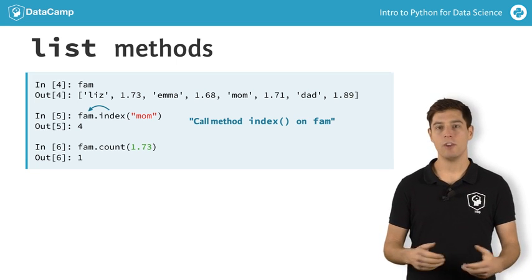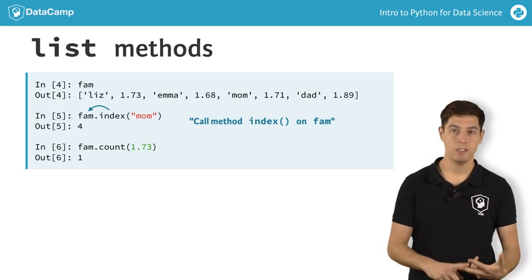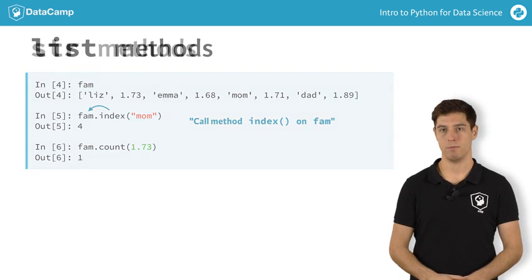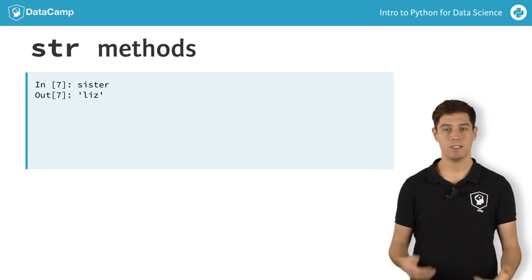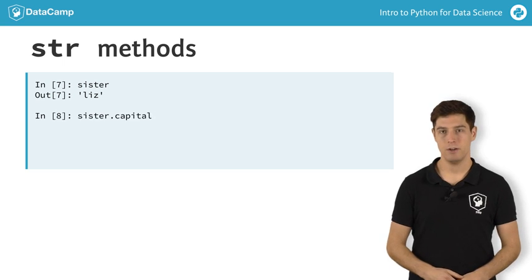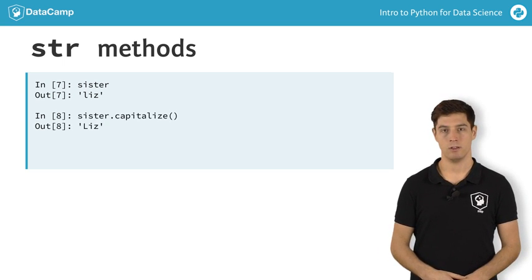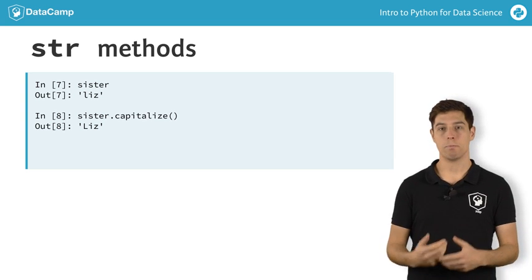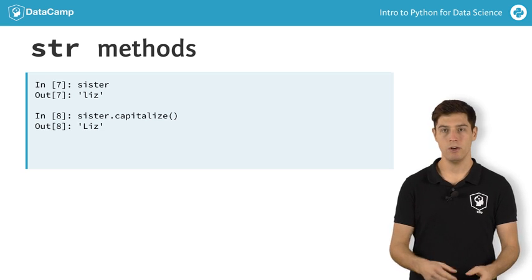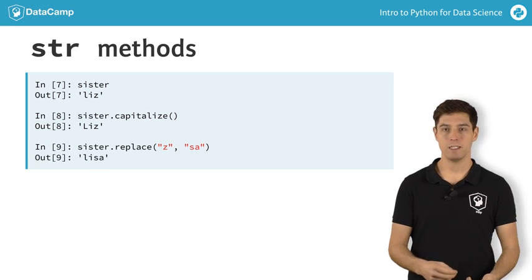But lists are not the only Python objects that have methods associated. Also, floats, integers, booleans, and strings are Python objects that have specific methods associated with them. Take the variable sister for example, that represents a string. You can call the method capitalize on sister without any inputs. It returns a string where the first letter is capitalized now. Or what if you want to replace some parts of the string with other parts? Not a problem. Just call the method replace on sister with two appropriate inputs. In the output, z is replaced with sa.